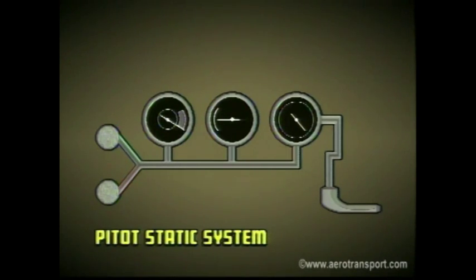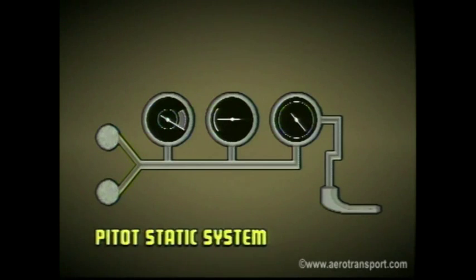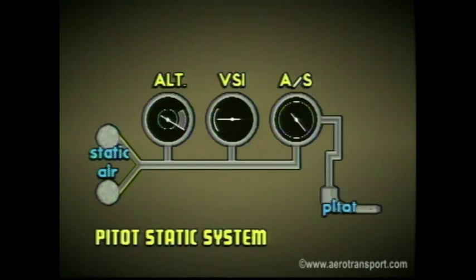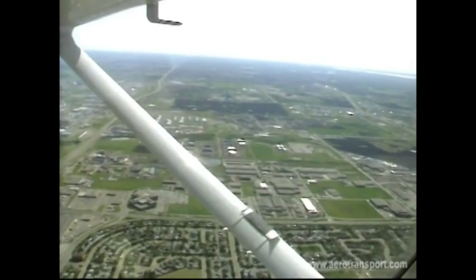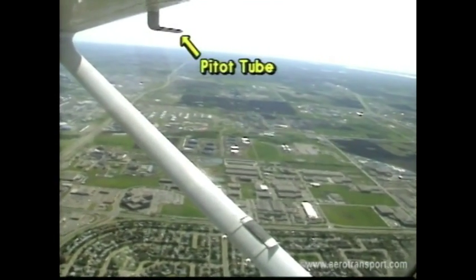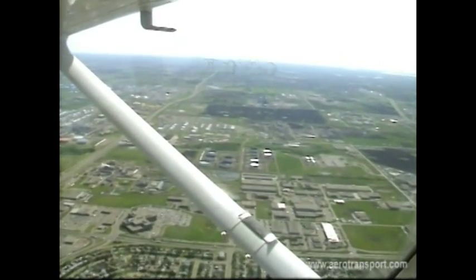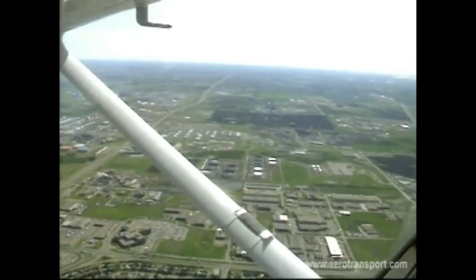Several of the instruments are connected to the pitot-static system, while others use a gyroscope. Instruments connected to the pitot-static system include the airspeed indicator, vertical airspeed indicator, and the altimeter. This system includes a pitot tube and a static pressure tube. The pitot tube is usually found on the underside of the wing, located in a spot where it is clear of slipstream and other air disturbances.